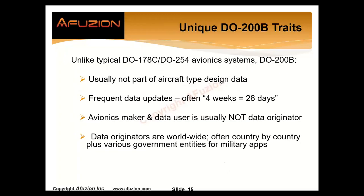There are unique aspects with DO-200B. In contrast to avionic systems — DO-178 for software, DO-254 for hardware — data is usually independent of a particular aircraft type design. There are frequent updates; we do not update avionics software frequently. With data, it's often updated every four weeks. The data originators are worldwide, often country by country, with different government entities for satellite mapping, weather, terrain mapping, and military applications.